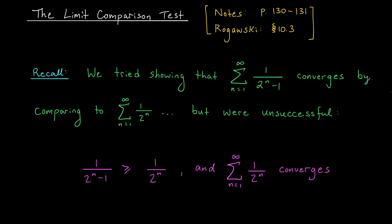The sum from 1 to infinity of the terms 1 over 2 to the n minus 1. Recall from our previous lesson that we suspect this series converges. Here's the reason why: when n becomes very large, the fraction 1 over 2 to the n minus 1 should be extremely close in value to 1 over 2 to the n. This additional minus 1 term in the denominator contributes very little to the overall value of the expression.